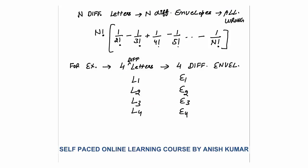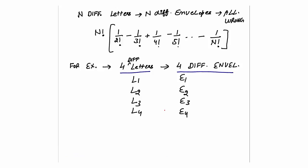For example, if I have four different letters and I want to post them into four different envelopes such that all go to the wrong envelope — L1 will not go to E1, L2 will not go to envelope 2, L3 will not go to envelope 3, and L4 will not go to envelope 4. Assuming E1 is correct for L1, E2 for L2, E3 for L3, and E4 for L4, but we don't want them posted in the correct manner.